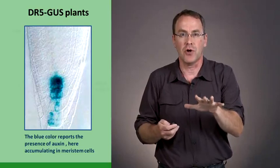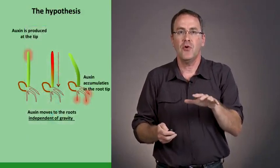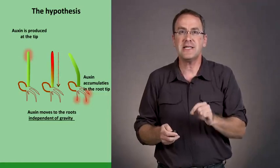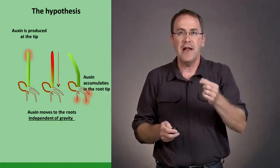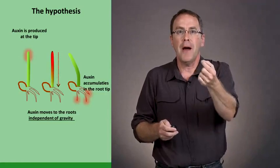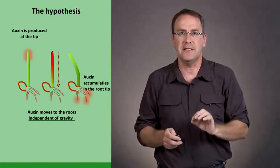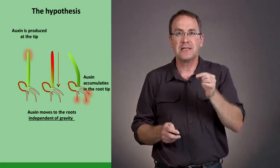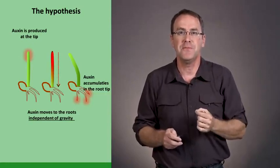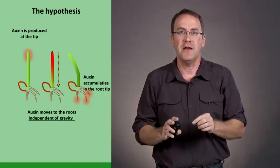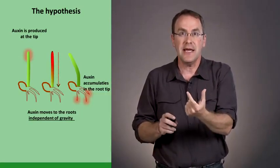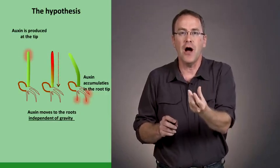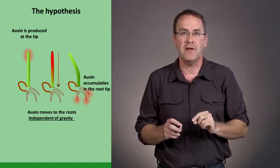This is the tool we're going to use. Here's the hypothesis: auxin is synthesized in the shoot and moves to the root by a polar transport mechanism that is independent of gravity. I'll repeat that—it's a polar transport mechanism independent of gravity, with the root acting as a sink for auxin, the place where all the auxin will accumulate independent of gravity.